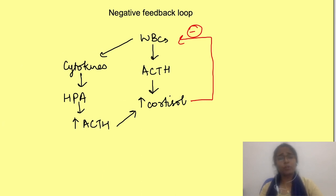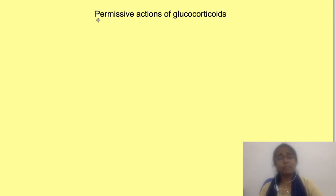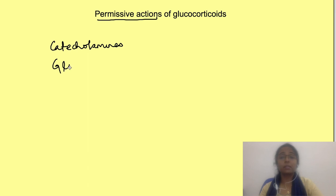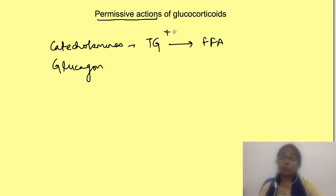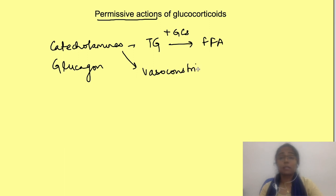Apart from this, glucocorticoids have many permissive actions — that is, the presence of glucocorticoids is needed for the action of other hormones like catecholamines and glucagon. The release of free fatty acids is the major action of catecholamines for which glucocorticoids are required. Also in acute stress they are essential to maintain blood pressure, as catecholamines cause vasoconstriction for which glucocorticoids are required.